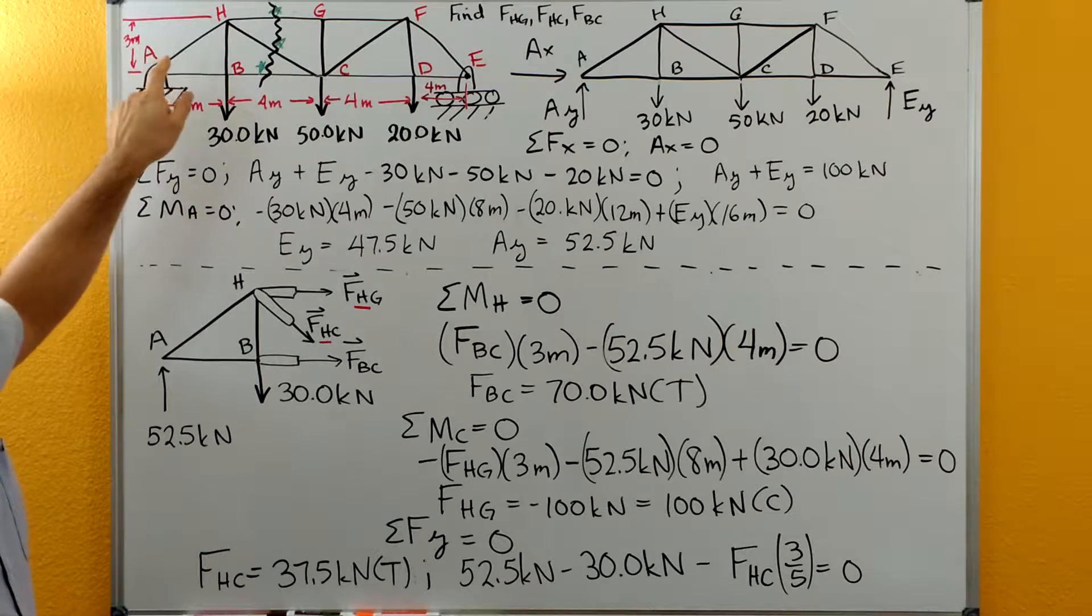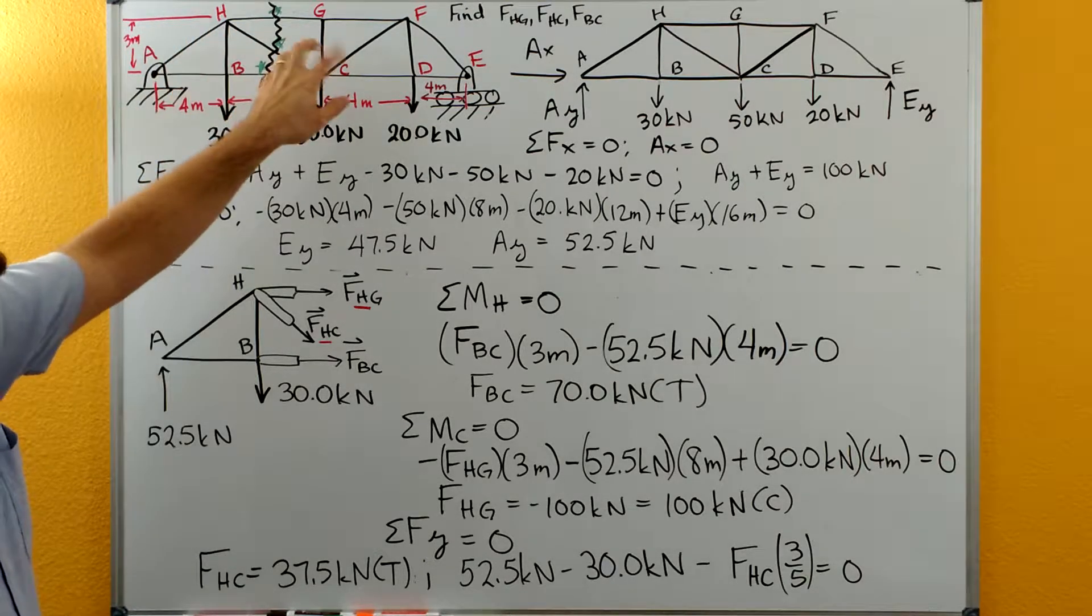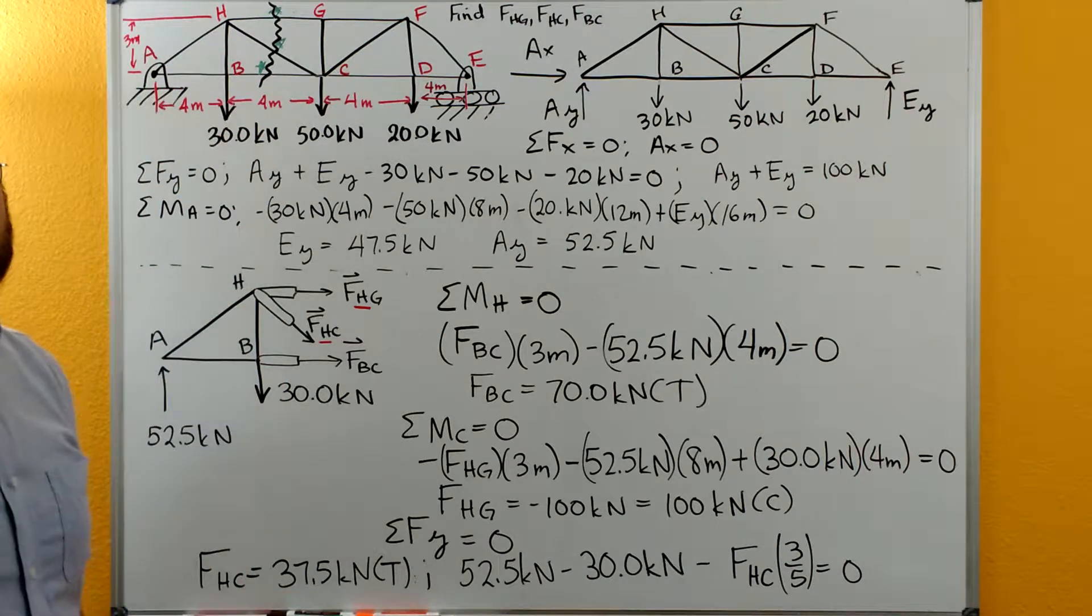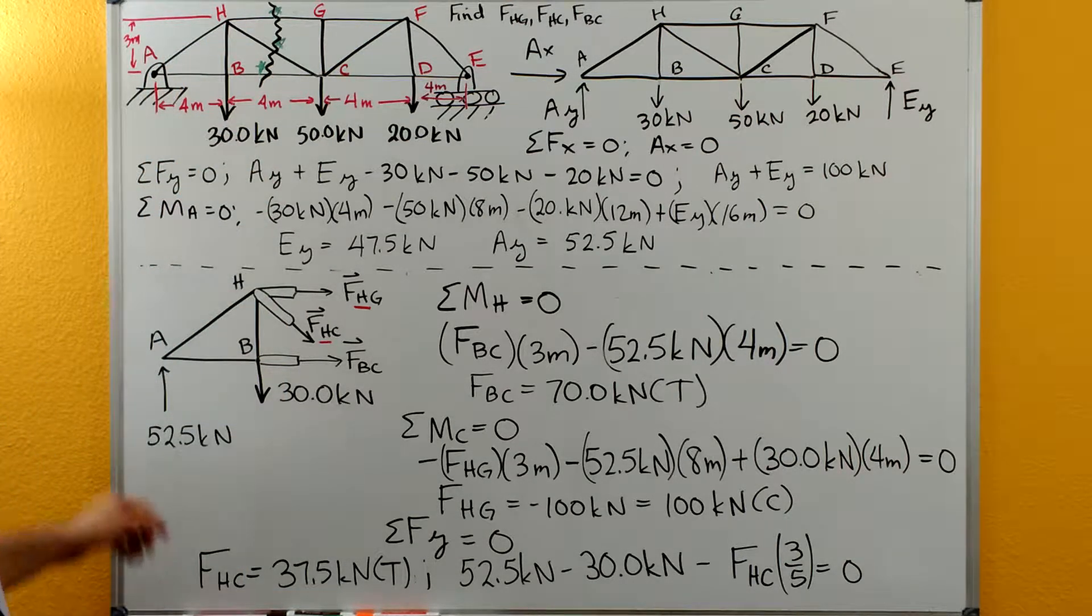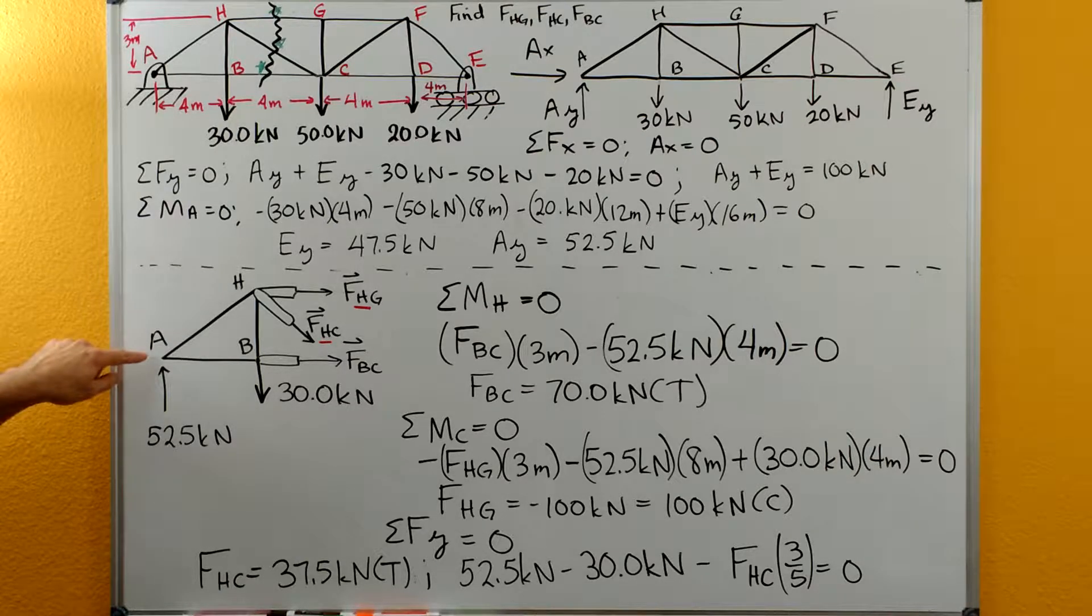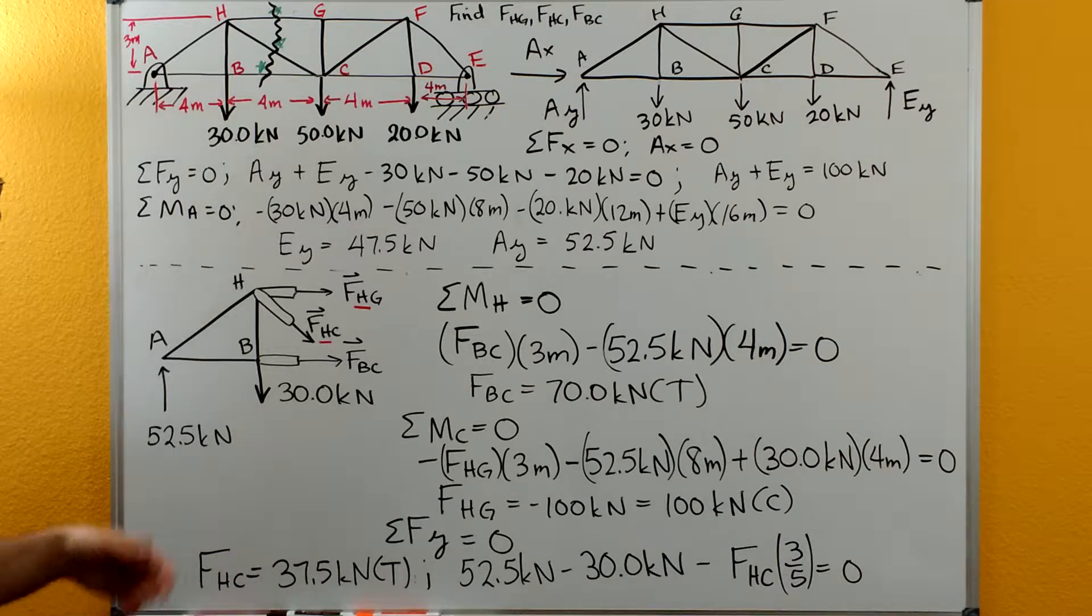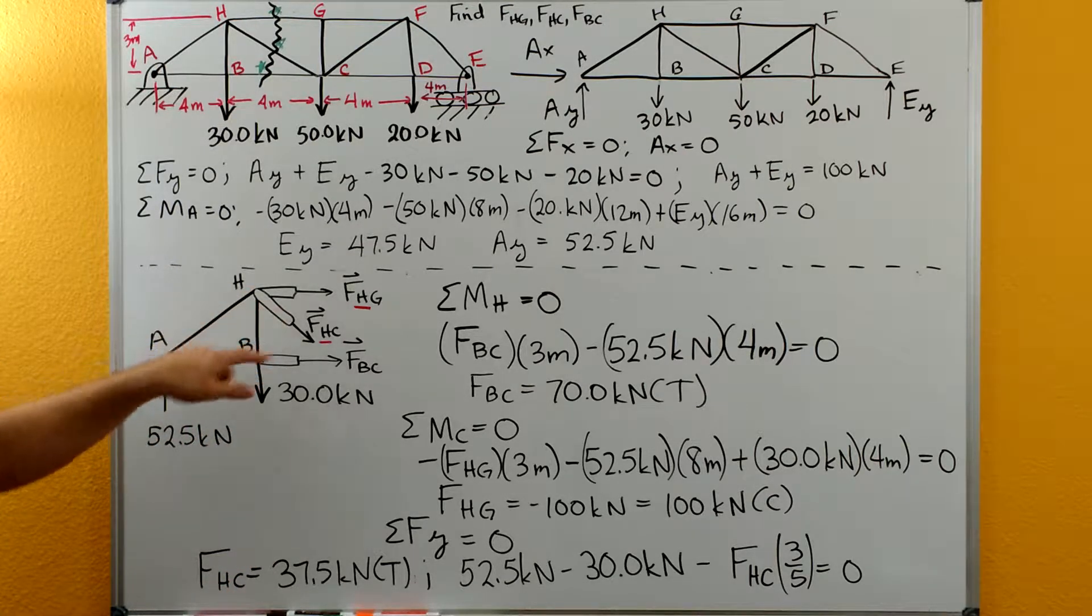Each piece of the truss needs to have at least two pins. If it doesn't have at least two pins or two joints, it's really just method of joints again. In this case, we have A, B, and H, so we have three pins. Here's our section view.